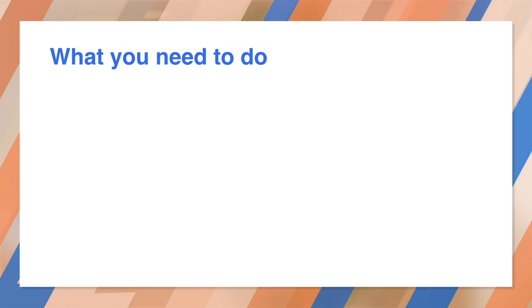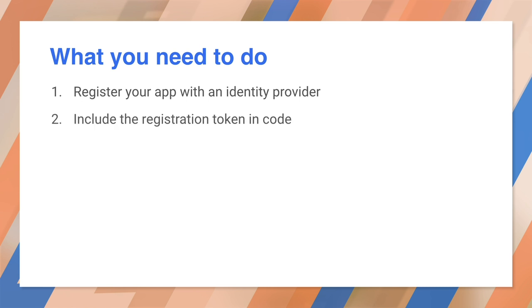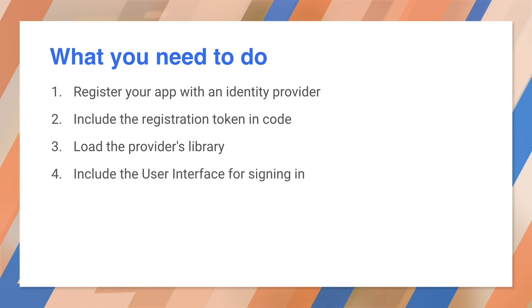Now that you know what the service does, let's see how to implement it. First, you'll need to get an application identifier from Google — this begins the trust relationship between Google and your site. Then you can add some meta tags to your sign-in page that include that identifier and some sign-in options. You'll also load the Sign In with Google library. One line of HTML is all you need to add the button, and a few lines of JavaScript will retrieve the user data.